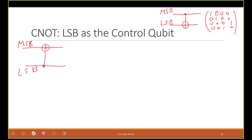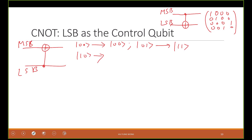We need to develop this a little bit. Just look at what the control-NOT means. If the input is |00⟩, the LSB is controlling and it is zero, so you do nothing. If it is |01⟩, the LSB is one, so you apply NOT to the target qubit and it becomes |11⟩. If it is |10⟩, you get |10⟩ because the controlling qubit — the LSB — is zero.